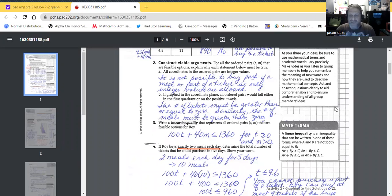Construct viable arguments for all ordered pairs T, M that are feasible options. Explain why each statement below must be true. All coordinates in the ordered pairs are integer values. The answer: it is not possible to buy part of a ticket, part of a meal. So only integer values are allowed. Integers are 1, 2, 3, 4, all whole numbers right? Can't buy part of a ticket here, 4.5. Big no-no.